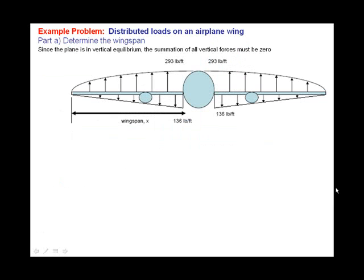So let's determine the wingspan. Knowing that the plane is in vertical equilibrium, we know that the sum of all the vertical forces must be zero. Let's establish a coordinate system so that we can now talk in terms of x and y. Said another way, this vertical equilibrium is the sum of the forces in the y direction must equal zero.